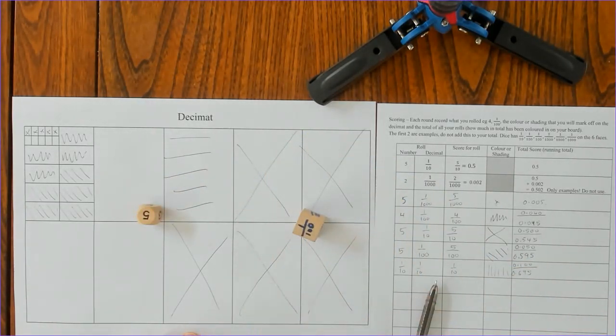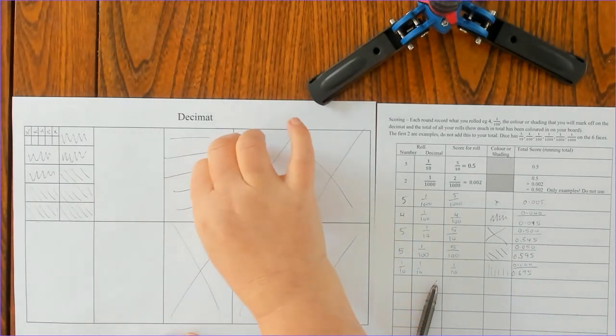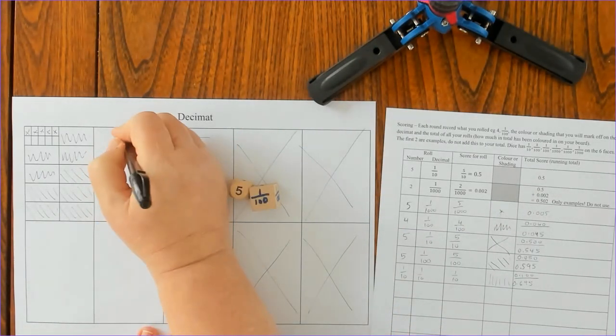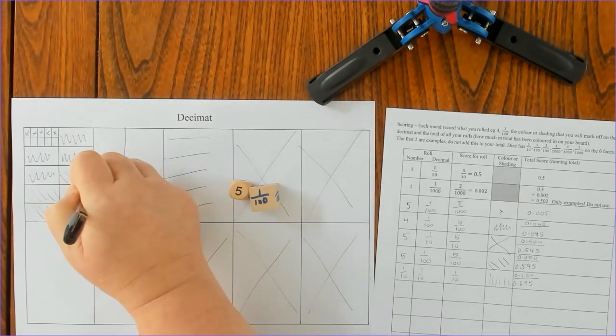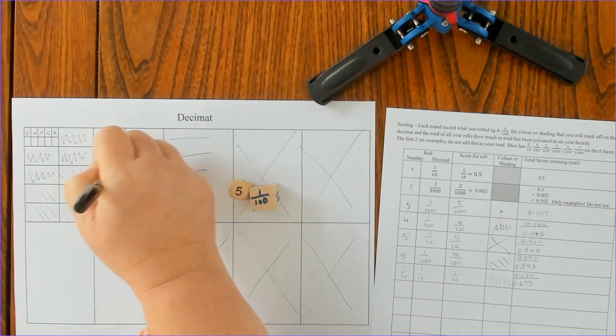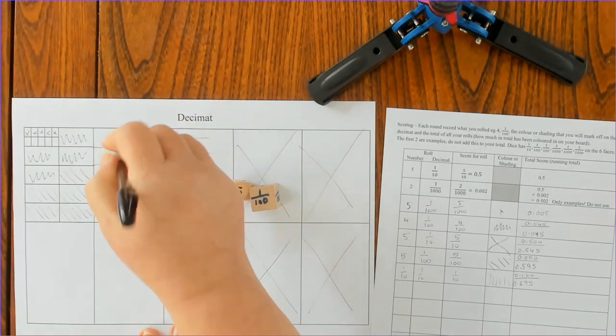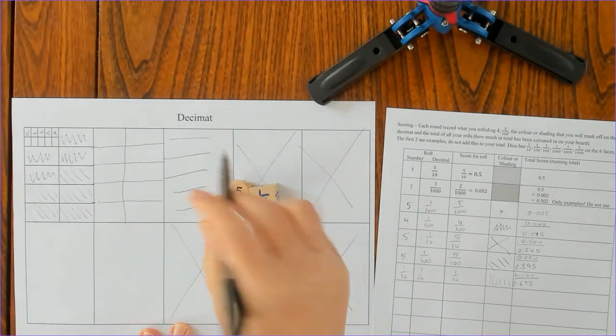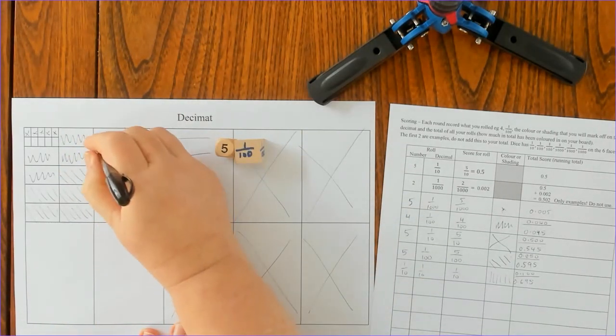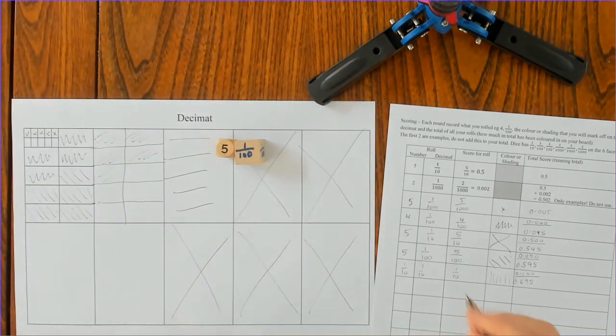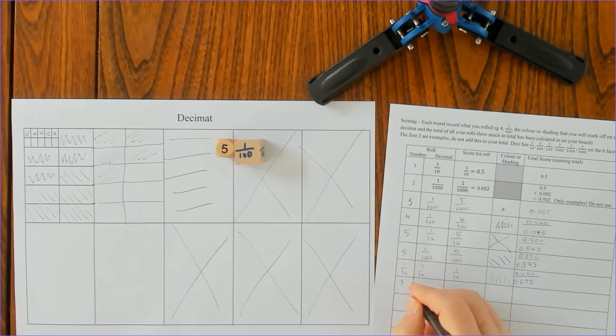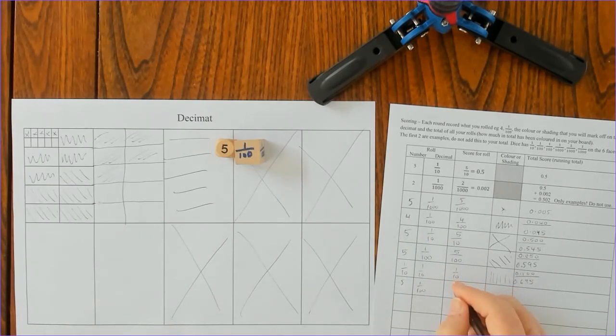Let's keep rolling. Now I've got five one hundredths, which means that I actually need to break one of my tenths into ten pieces. Now I can color in five one hundredths, so one, two, three, four, five. You just keep breaking whatever you need, whether they're hundreds or thousandths, from the bigger size piece.